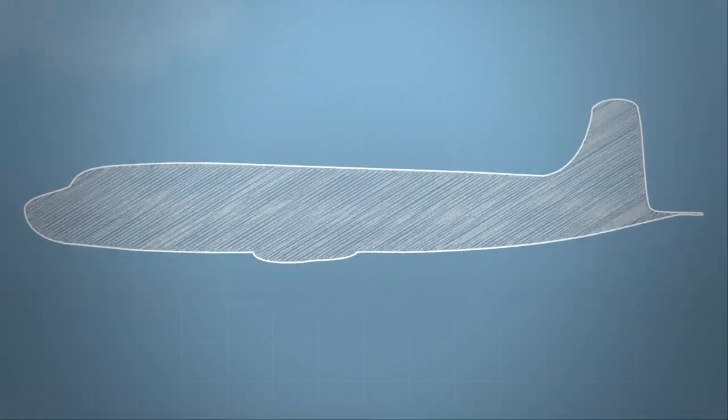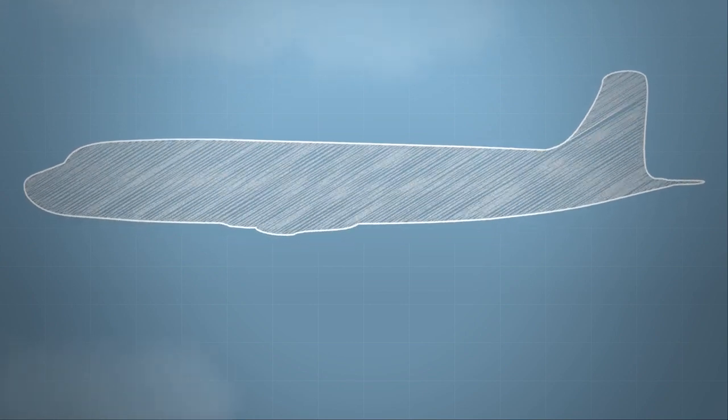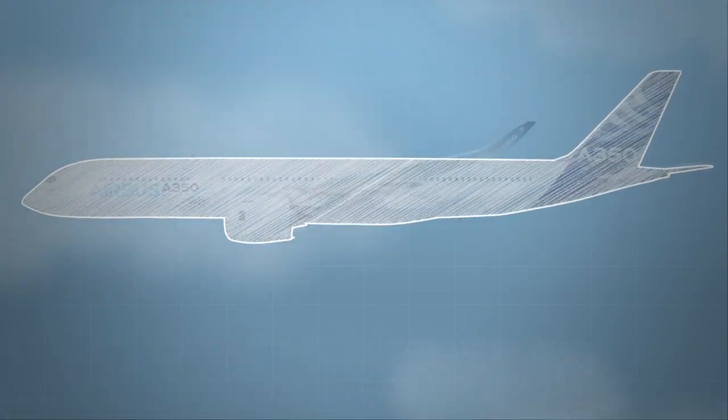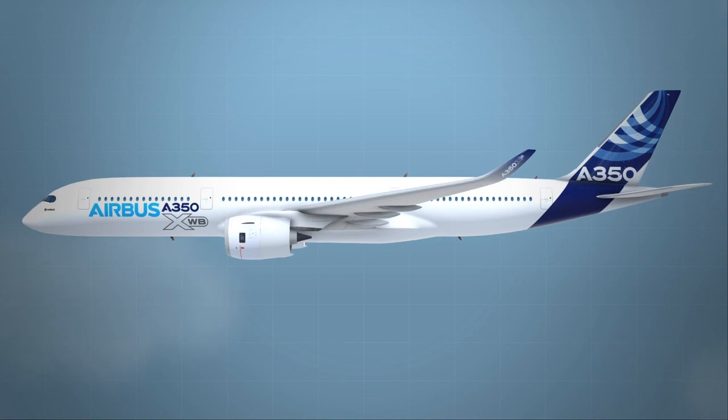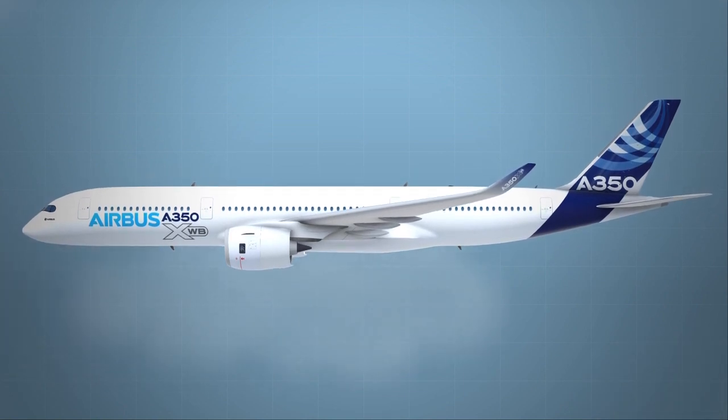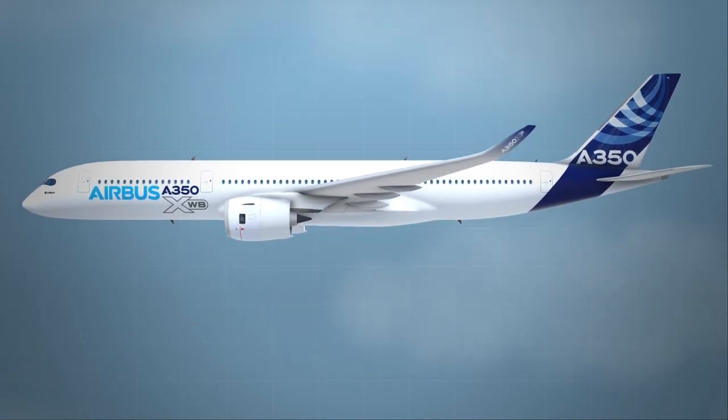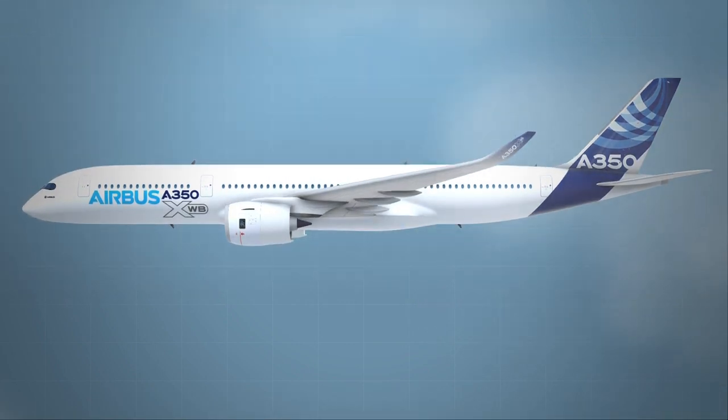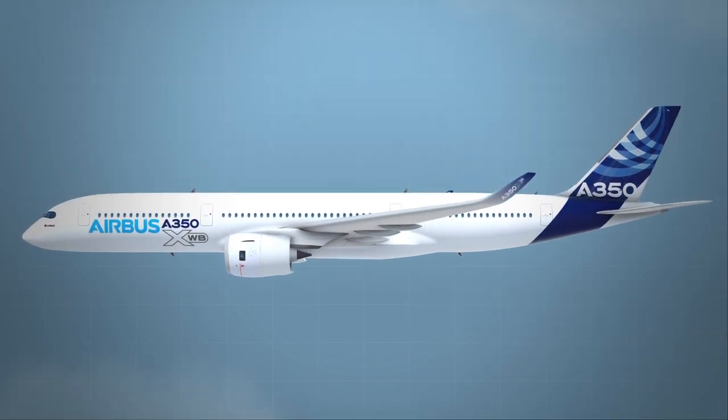Designs have morphed from the boxy appearance of the 50s to designs like the one on our A350. Its sharp nose is designed to minimise the airflow separation over the rest of the fuselage, reducing drag, meanwhile giving greater visibility for the pilots.